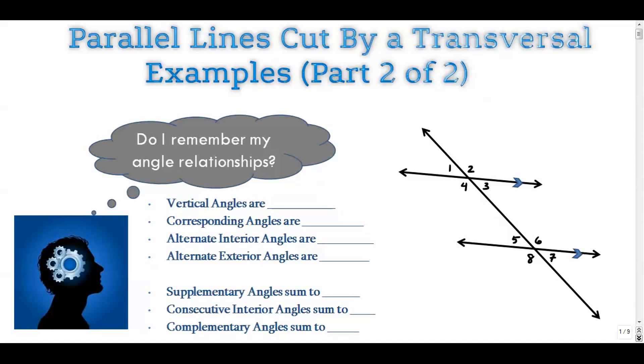Vertical angles, if you remember from a couple of videos ago, vertical angles are angles that are across from each other. Angle one and angle three are vertical. And vertical angles, in terms of their mathematical relationships, are congruent. The angles are the same.